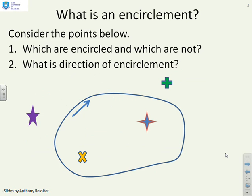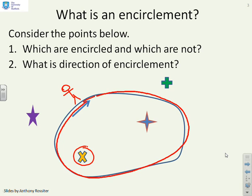So first, what is an encirclement? Which of the points below are encircled and which are not? And what is the direction of the encirclement? This cross here is clearly encircled. You can see if you put a man, or a woman indeed, on this point here and they follow around the given track, clearly they have encircled that yellow cross.